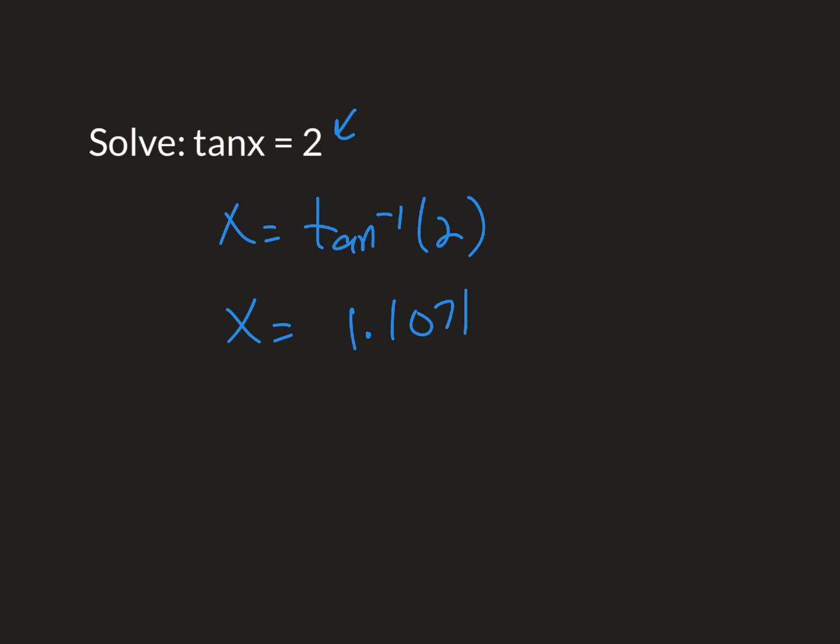But what I need is the quadrant 3 answer. Now, think about this. How far is quadrant 3 from quadrant 1? And the answer is it's pi away, it's half the circle away. So I'm going to add pi to that answer, which I'm doing right now on the calculator, and it's giving me 4.25. So there are my two solutions there.